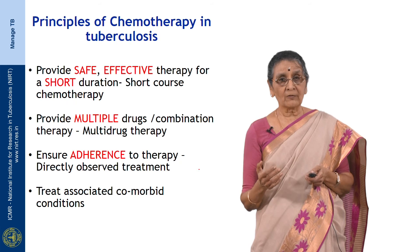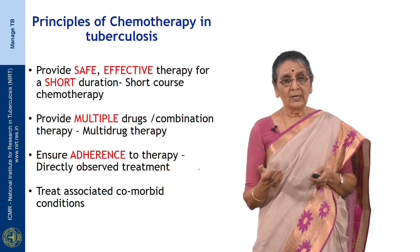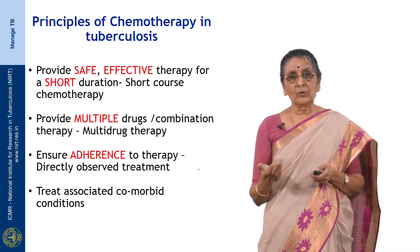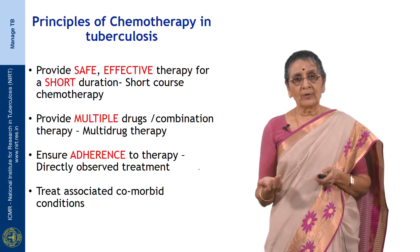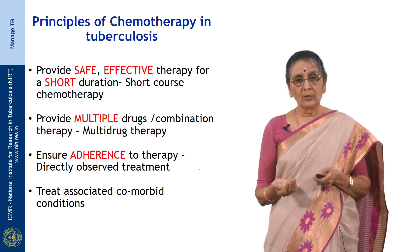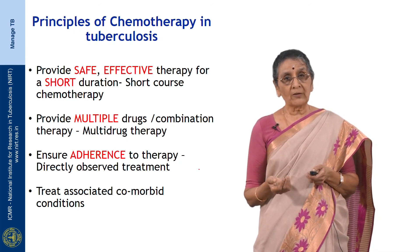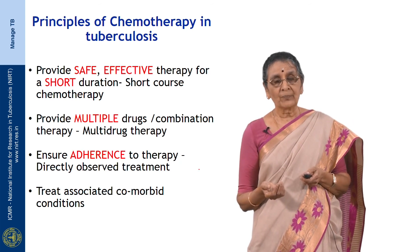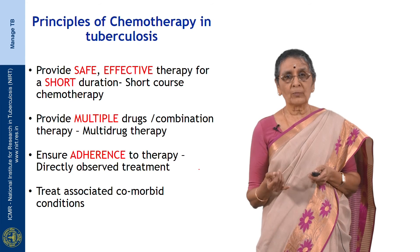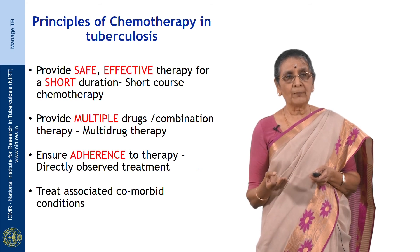It is also important to ensure treatment regularity and adherence, helping the patient complete his treatment. WHO recommends directly observed treatment, or DOTS, in this regard — a community provider, a household member, or a health worker helps the patient complete treatment. It is equally important to look for associated comorbidities like HIV and diabetes and treat them accordingly. To summarize: safety and efficacy, use multiple drug combinations, and ensure the patient completes treatment with DOTS support.